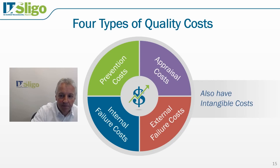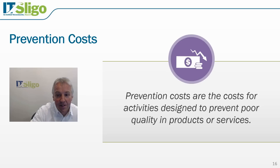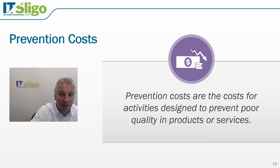Prevention costs are the costs designed to prevent poor quality in products or services — and this is where most of your focus should be. Examples include project planning, using the DMAIC process, supplier capability surveys, quality improvement team meetings, quality improvement projects, and education and training. All of those are prevention costs.